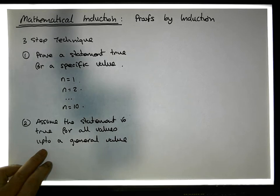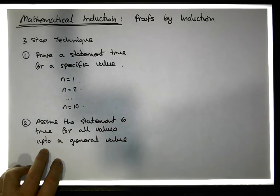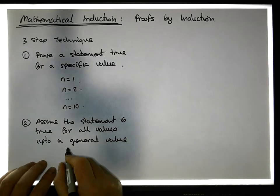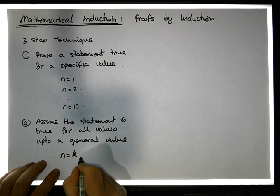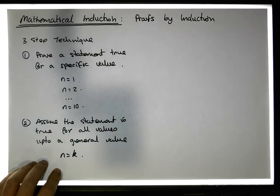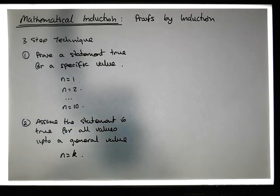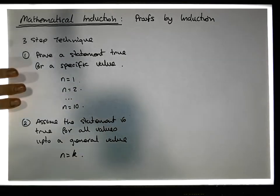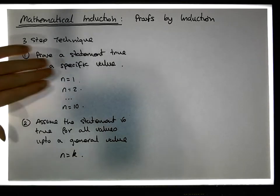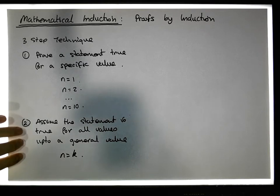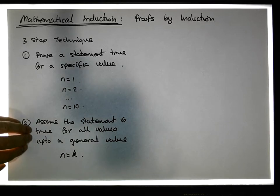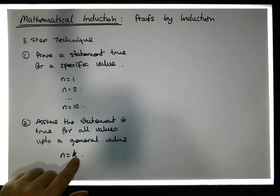We assume that the statement is true for all values up to n equals k. So the first step is to show it's true for a specific value, and the next step is to assume it's true for all values up to some general value k.